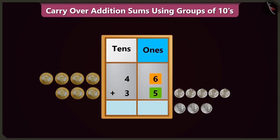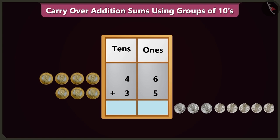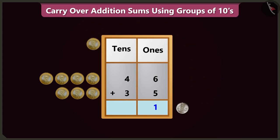That is seven, eight, nine, ten — and we will get eleven. Well done! So eleven means one tens and one ones. We will write one in the ones box and carry over one ten, and write it in the tens box.